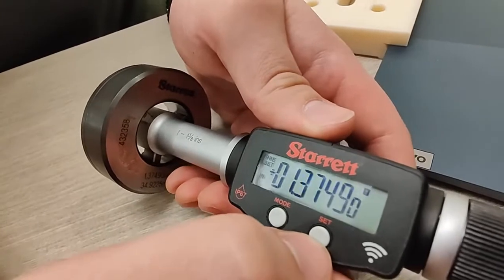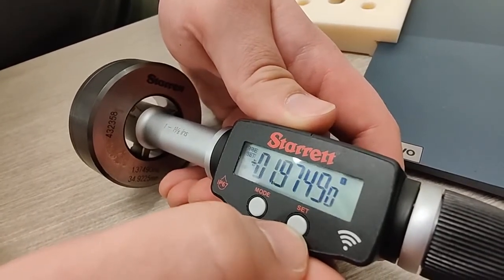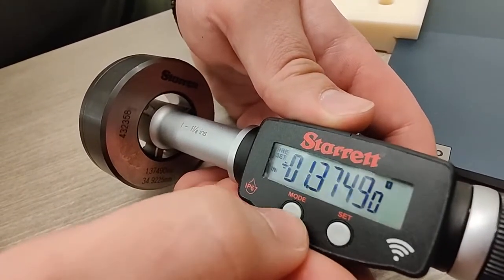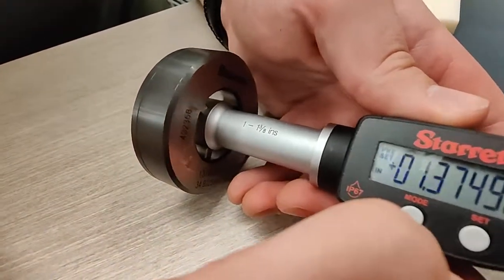If we wanted to change these values, we would hit the set button and cycle through. So we want 3, 7 is correct, 4 is correct, 9 is correct, and 0 is correct.